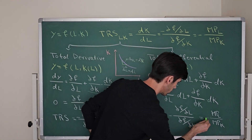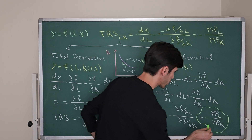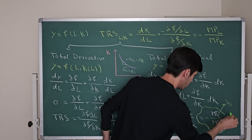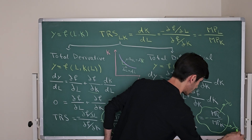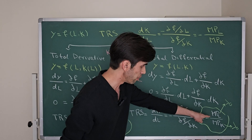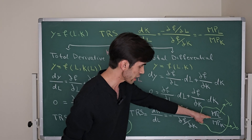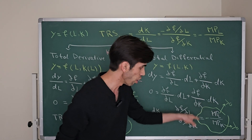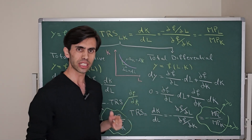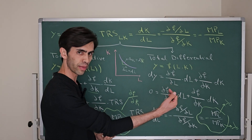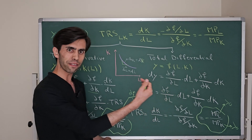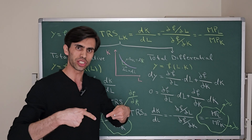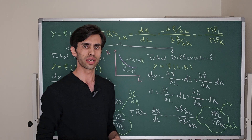What does the negative sign mean here? Marginal productivity of labor is greater than zero and marginal productivity of capital is greater than zero, so positive divided by positive is positive. The negative sign means the overall expression is negative — if you are using more labor, you have to reduce the level of capital in order to stay on the same isoquant curve.